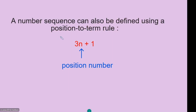A number sequence can also be defined using the position-term rule. We have a rule here where n, in any rule, represents the position number. So to find the first number in a sequence, n will be 1.